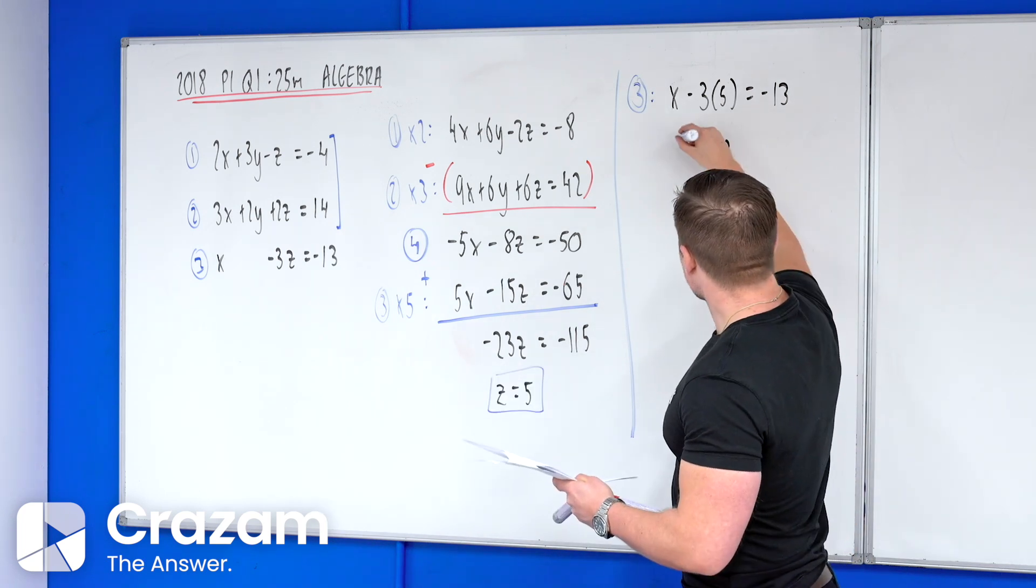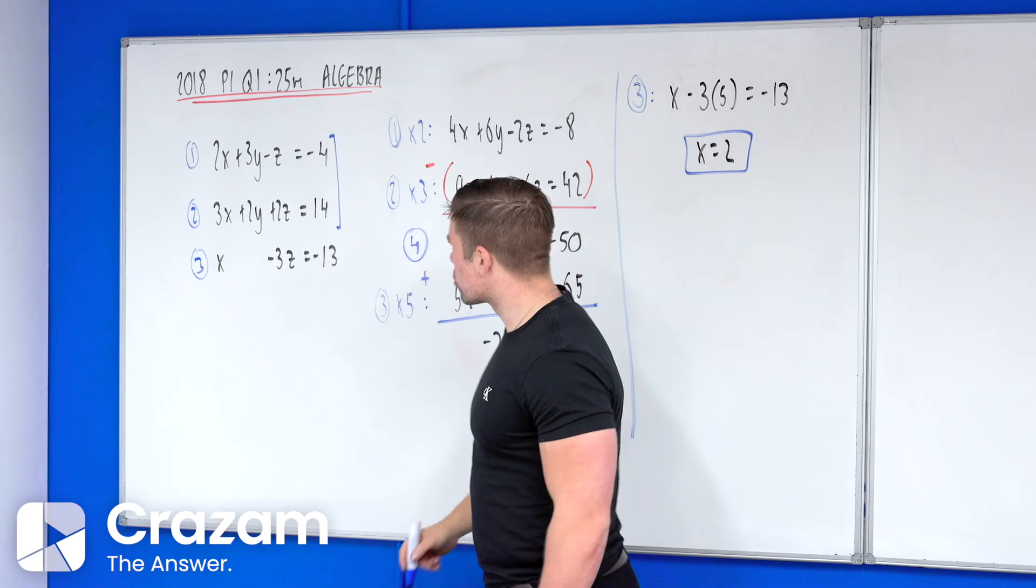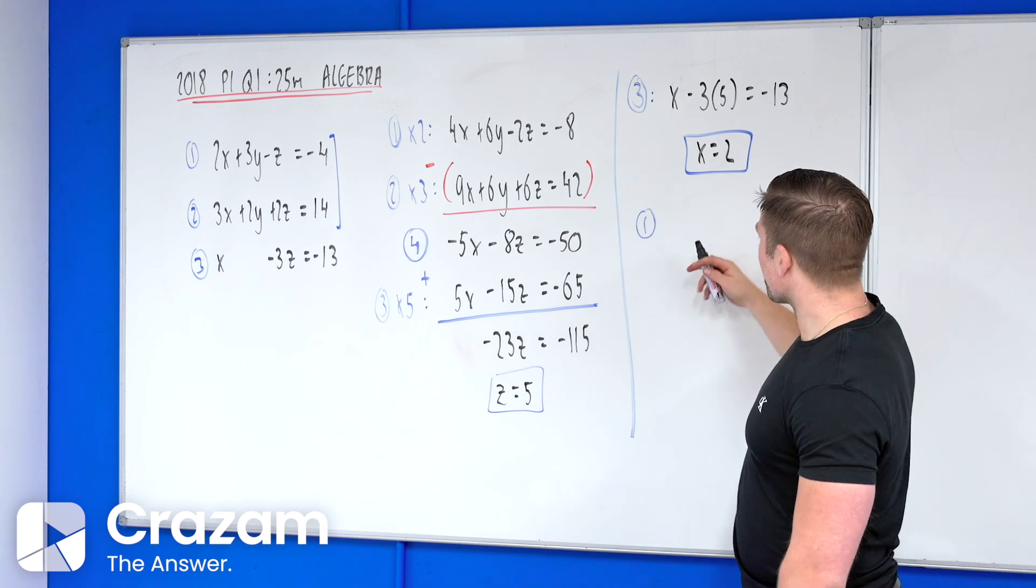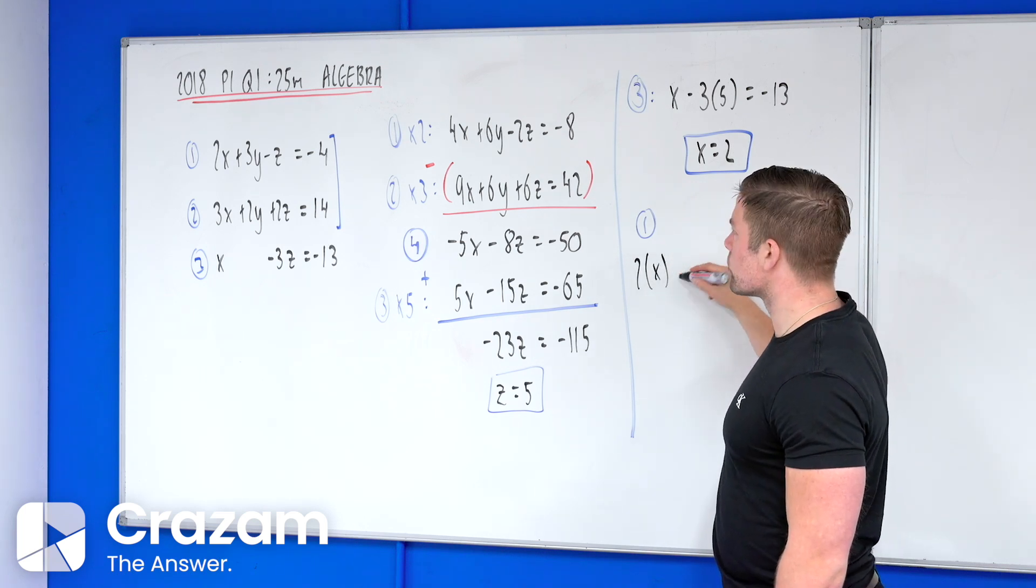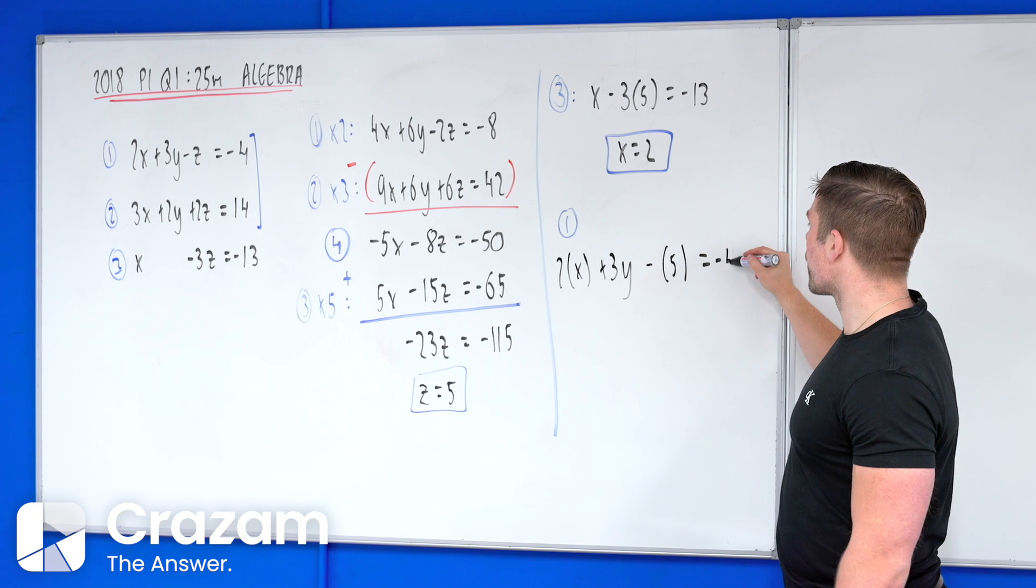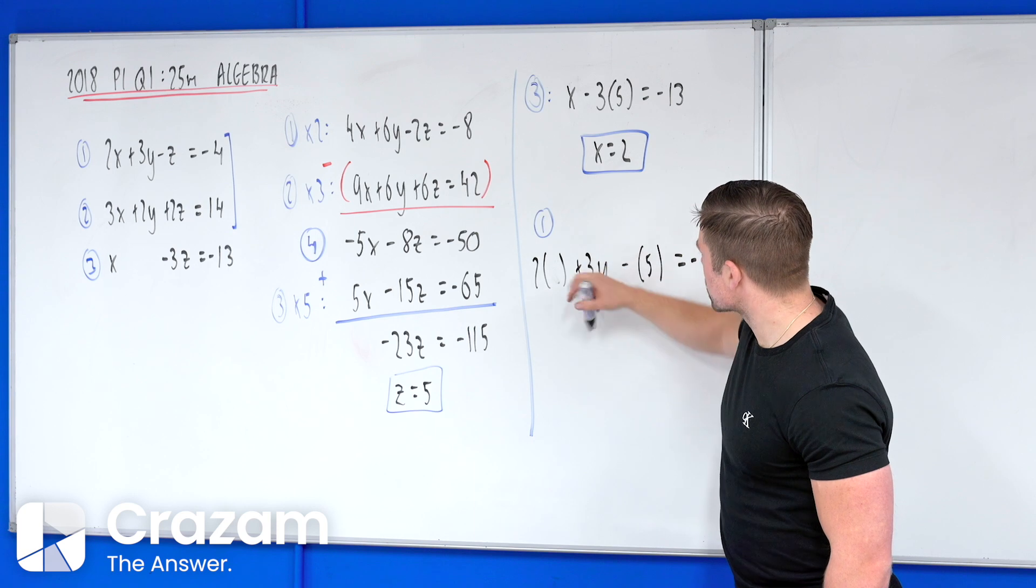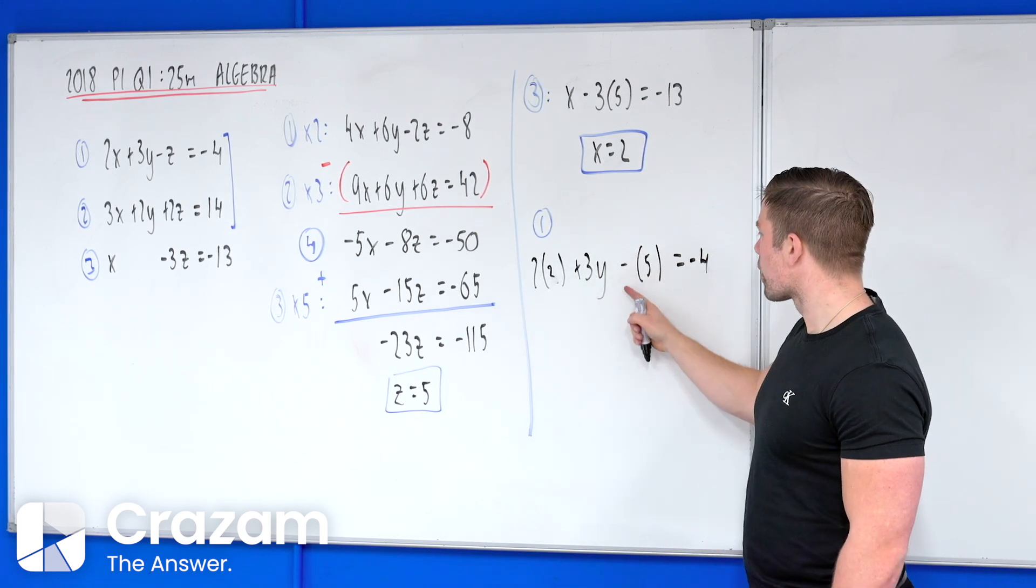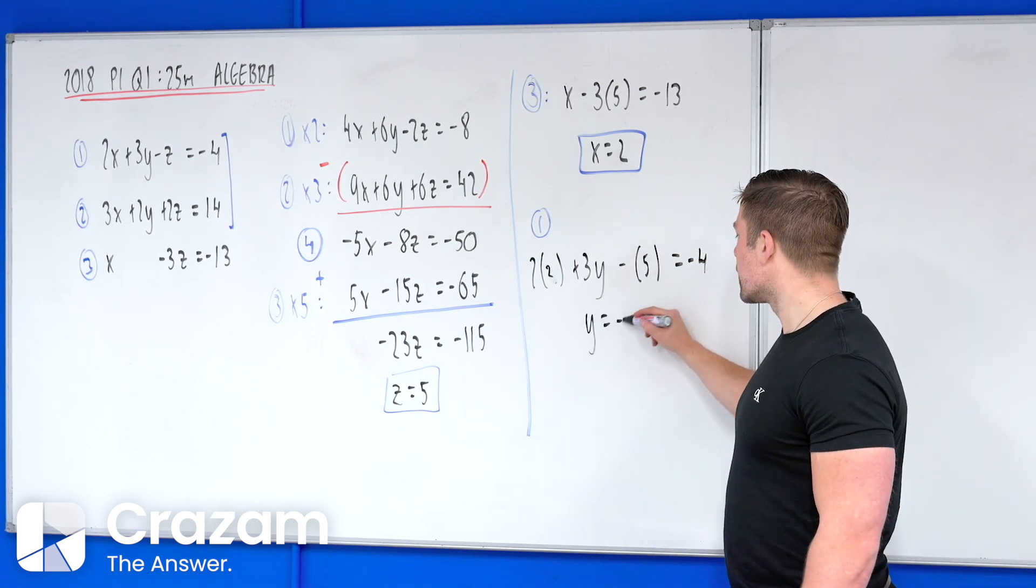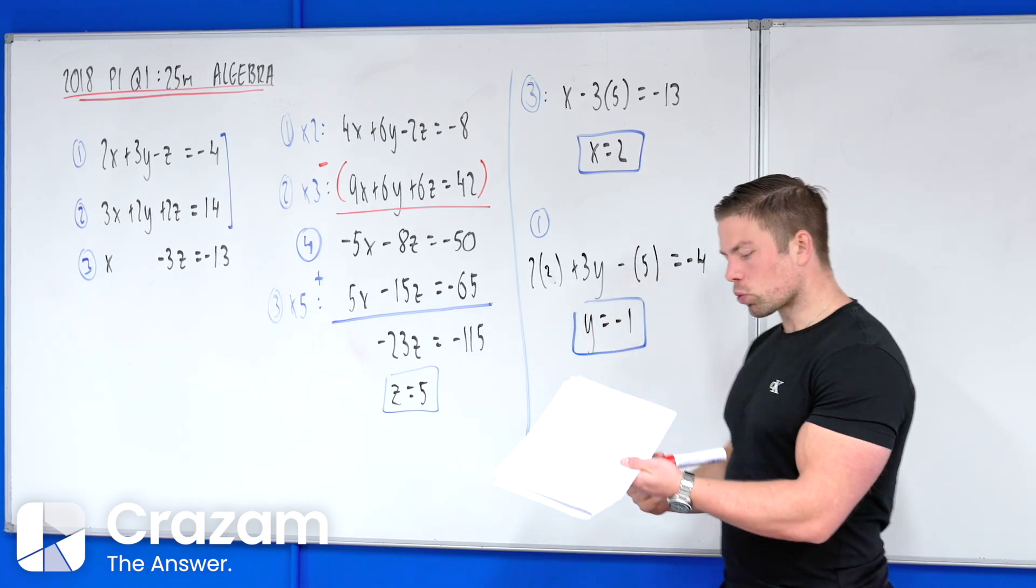So there's our second value, and to get our third value we must sub back into either equation one or equation two. So if I sub it back into let's say equation one here, fill in your values for x and z. So two times x plus three y, which is what we're looking for, minus five equals to minus four. If we put in the two there, we've got two times two is four, minus five is minus one, we can bring that across and tidy up, we get that y equals to negative one.